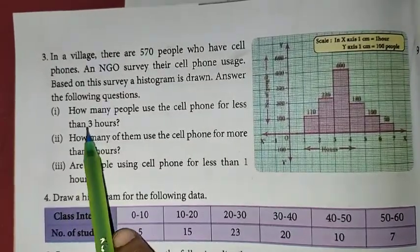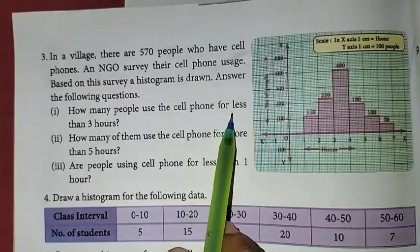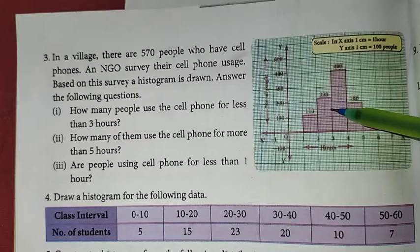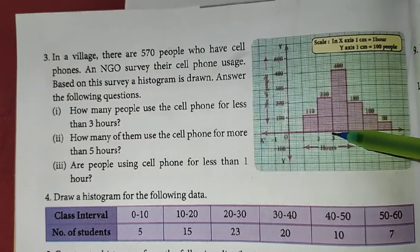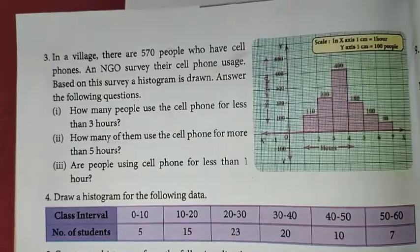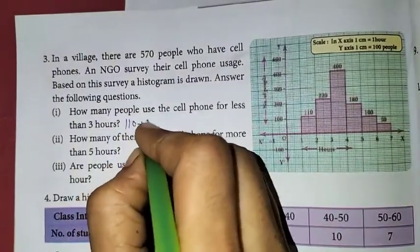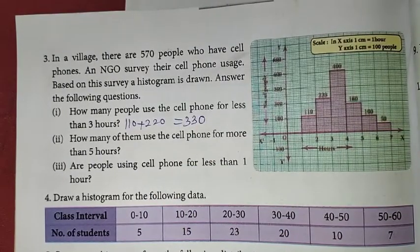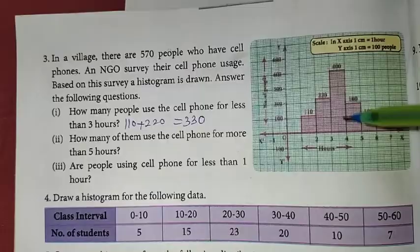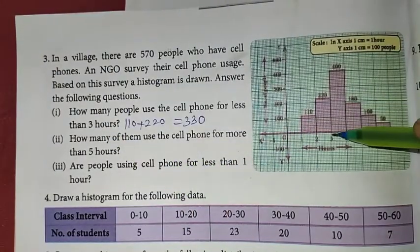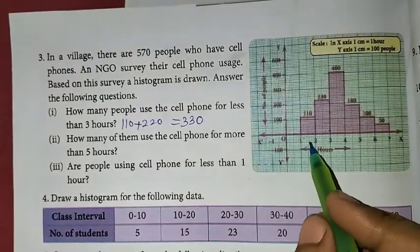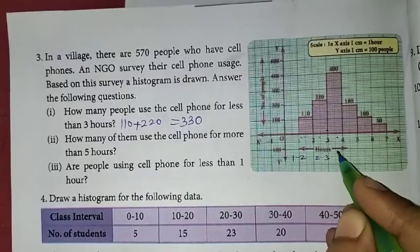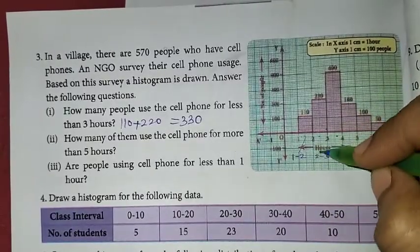Now, how many people use the cell phone for less than 3 hours? This one is going to be how many people, 110 plus 220. So 110 plus 220 is nothing but 330 people. Less than 3 hours use this one.